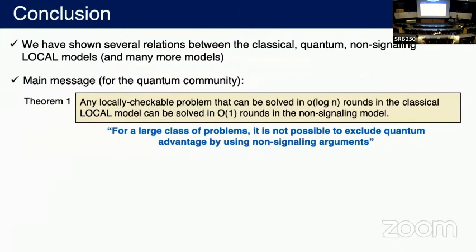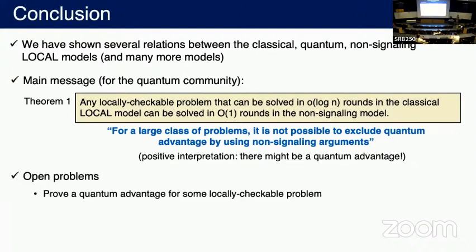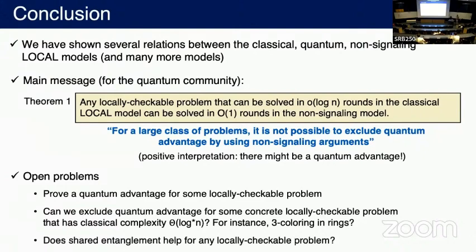To conclude, we have shown several relations between classical, quantum, and non-signaling local models. The main message for the quantum community is that for a large class of problems, it is not possible to exclude quantum advantage using non-signaling arguments because non-signaling strategies are extremely powerful. The positive interpretation is that there might be a quantum advantage. The main open problems are: finding a problem exhibiting quantum advantage, excluding quantum advantage for one specific problem such as three-coloring in rings, and understanding whether shared entanglement helps for any locally checkable problems.